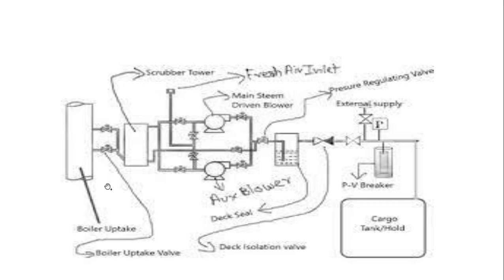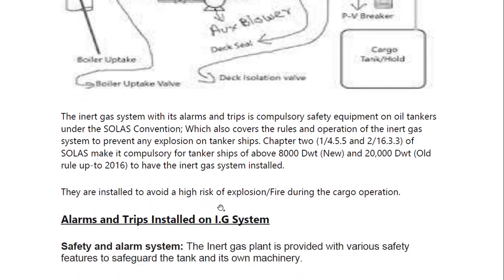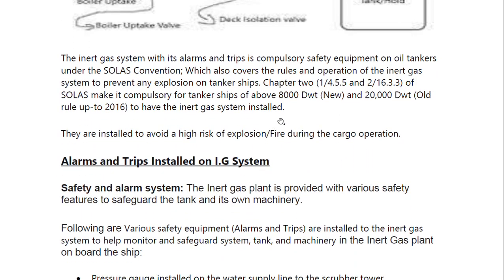The diagram shown here is a boiler uptake IG system using exhaust gases for generating inert gas. Components include: IG deck isolation valve, fresh air inlet, scrubber tower, boiler uptake valve, PV breaker, pressure regulating valve, external supply, cargo tank, hold, deck seals, auxiliary blowers, and main steam. There is also a system known as an inert gas generator. Regarding requirements, it was previously 20,000 DWT, then 10,000, but now it is 8,000 DWT to have this IG system on board.